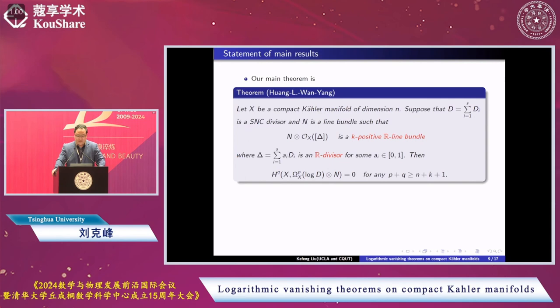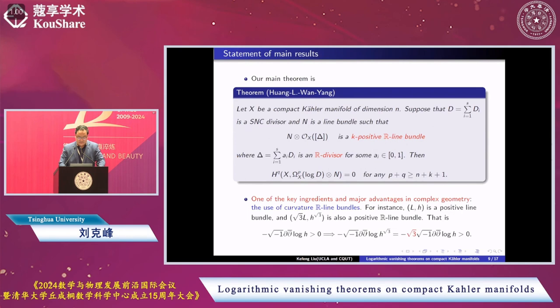Here, this delta equals summation a_i D_i, and it's an R-divisor with real numbers a_i between 0 and 1. In the vanishing case, we have H^q(X, omega^p(log D) tensor N) equals 0 for any p plus q greater or equal to n plus k plus 1.